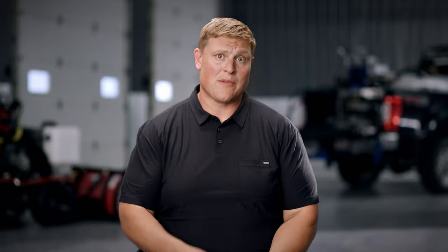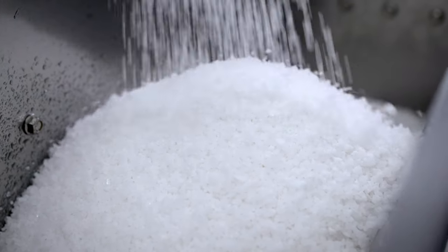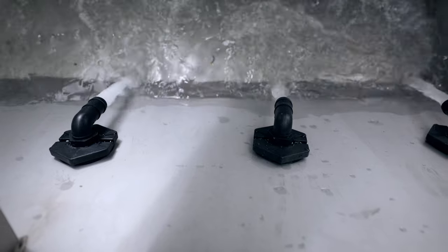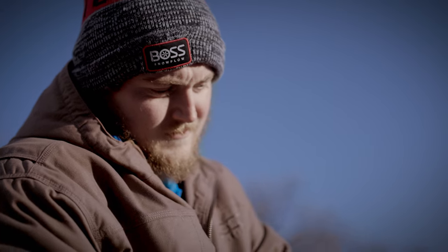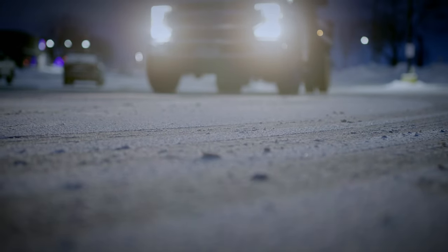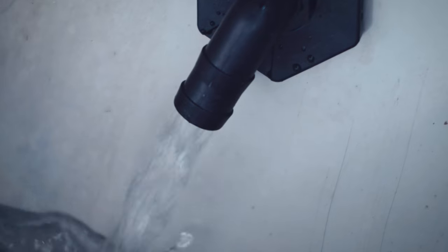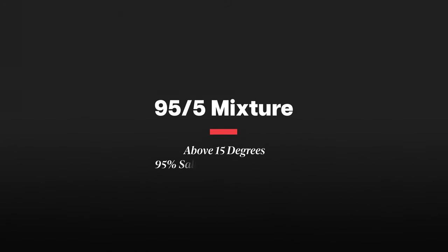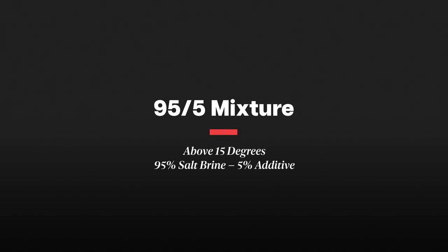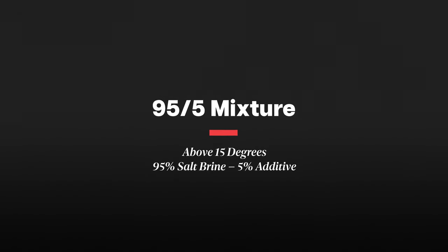Now that we've covered application rates, let's talk about what we're putting down. Typically, when putting down liquids as a contractor, you're putting down a blend of salt brine and brine additives. The blend depends on a lot of different things — first and foremost, the weather: the temperature outside and the pavement temperature. There are times when you can get away with using straight brine, and those are when the temperature is over 25 degrees, the sun is out, or you know it's going to be above freezing that day. We typically recommend that for anything above 15 degrees, use a 95-5 blend — that's 95% salt brine and 5% brine additive.